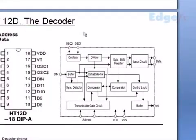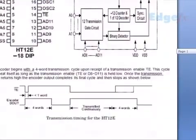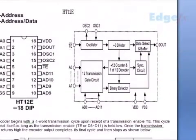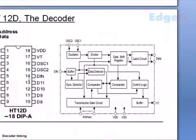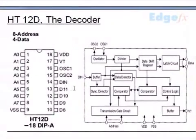The 12D decoder IC - we have seven address pins, this is the ground, this is the supply, and this is a valid transmission pin. We also have the same oscillator two pins for fixing resistors here, and we have four data pins. We have one D-in pin - the data that has been transmitted from the encoder DOUT will enter the decoder here at pin number 14.